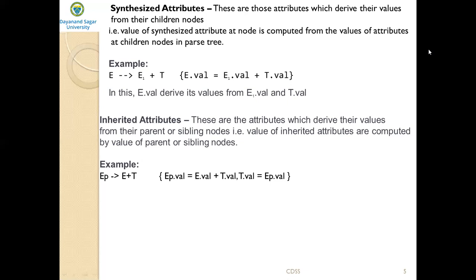Here is an example of syntax-directed definitions. Consider the grammar for arithmetic expressions. The SDD associates to each non-terminal a synthesized attribute called val. For each production rule, we have a corresponding semantic rule. The start symbol is L → E newline, where N stands for new line — indicating the end of the input.